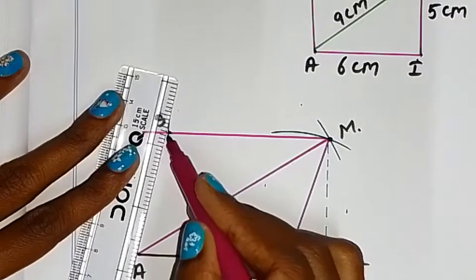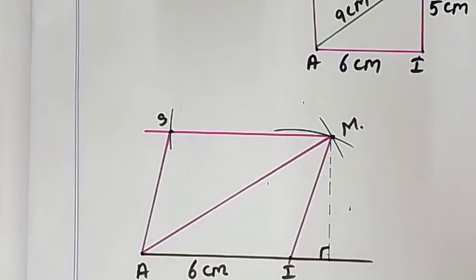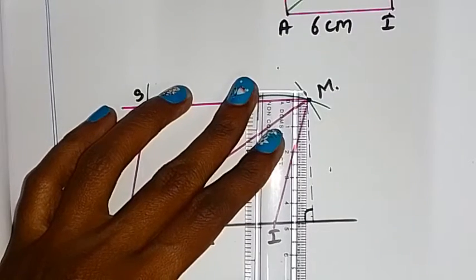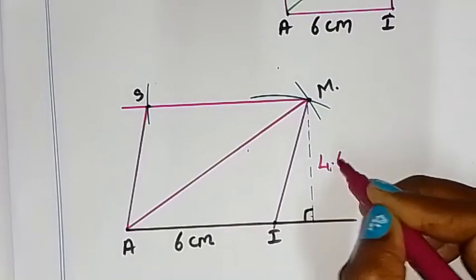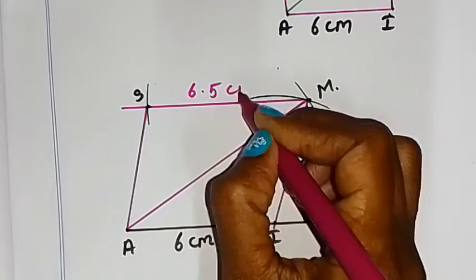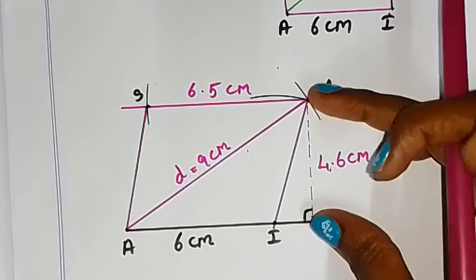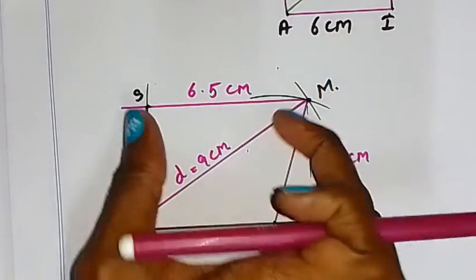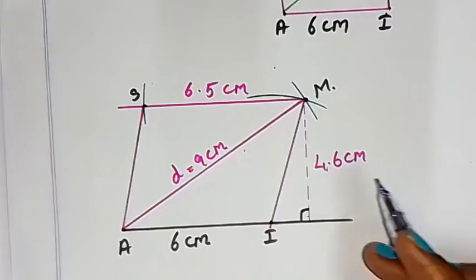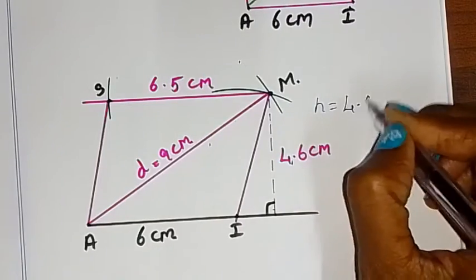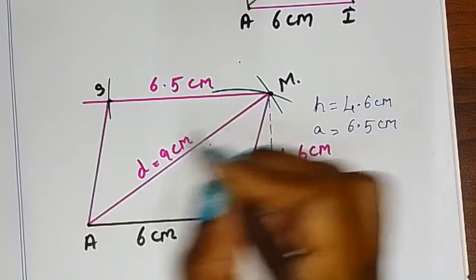So this measurement height is 4.6 cm. 6.5 cm diagonal, 9 cm. So now this area, height, parallel lines measurement, parallel lines length 6.5 cm, 6 cm. So height is equal to 4.6 cm, a is equal to 6.5 cm, b is equal to 6 cm.